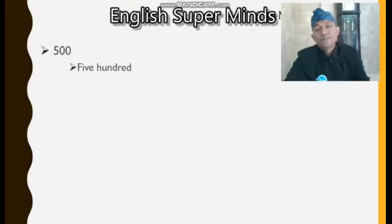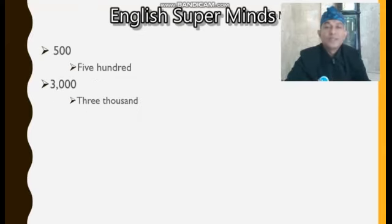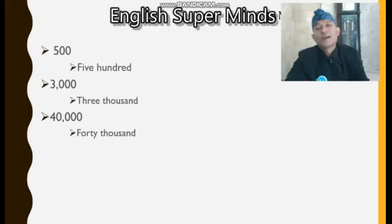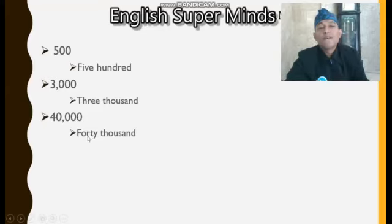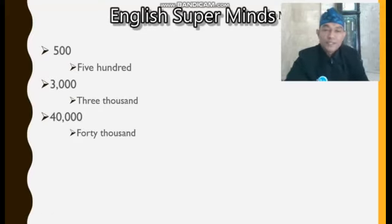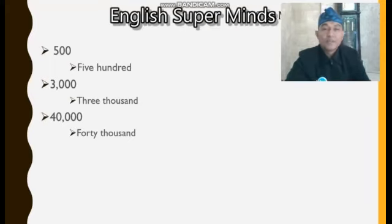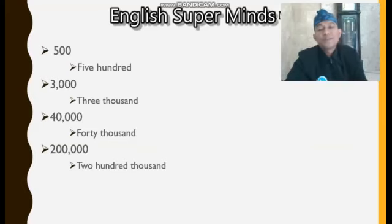Five hundred — lima ratus. Three thousand — tiga ribu. Forty thousand — perhatikan cara penulisan huruf O di sini, jangan menggunakan U. Don't use U here. Forty — F-O-R-T-Y — thousand. Two hundred thousand. Five million — there are six zeros, nolnya ada enam.